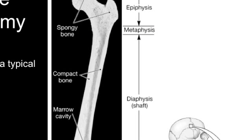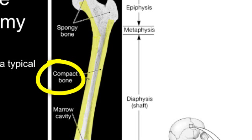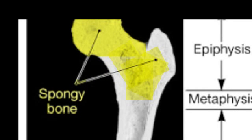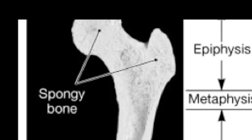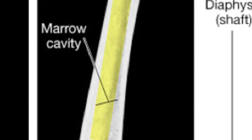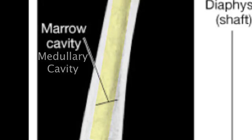All bones have an outer covering of dense bone called compact bone. Inside the epiphysis and in particular areas of bone grows a less dense pattern known as spongy or cancellous bone. Spongy bone is lightweight but still very strong, and it's also where red marrow grows. The marrow cavity of the diaphysis, sometimes called the medullary cavity, has yellow marrow in it, which is actually just adipose tissue.